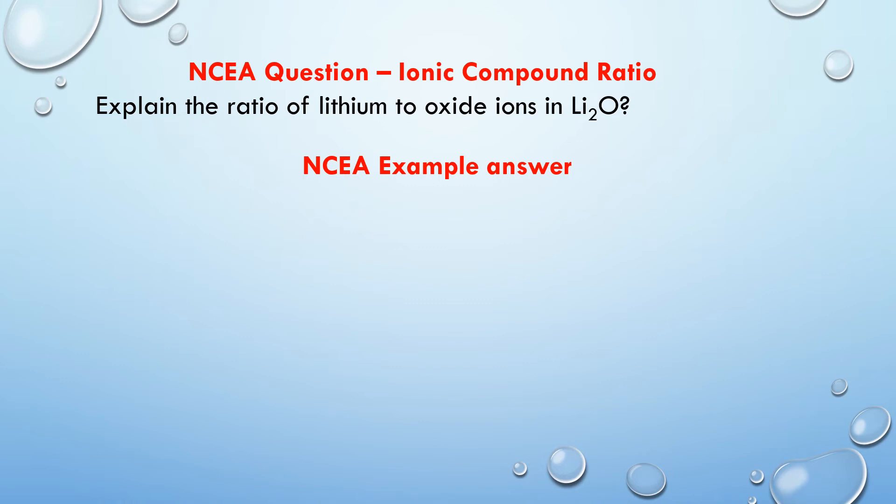I've got an example here of how you might answer this question they'll give you. This is a specific type of question they give you in this paper, in this describe aspects of acids and bases. They're always going to ask you to describe why this ionic compound has this ratio. Now, one thing you need to remember, of course, about the ionic compound is it's always a neutral compound. The positive and negative must be equal and cancel out to make it neutral.